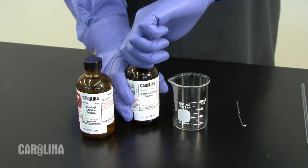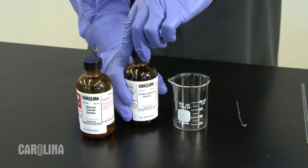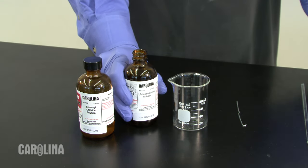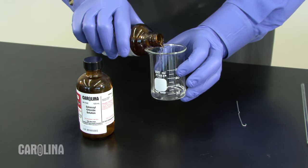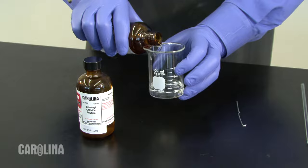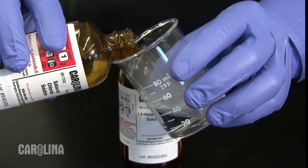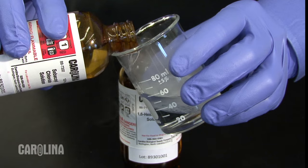To make nylon, we simply place the two monomers in the presence of each other. First, obtain a 100 milliliter beaker and pour in about 25 milliliters of the 1,6-hexanediamine. Tilt the beaker slightly and slowly pour in an equal amount of sebacoyl chloride.